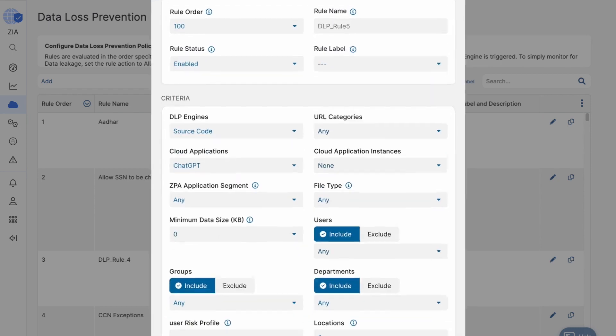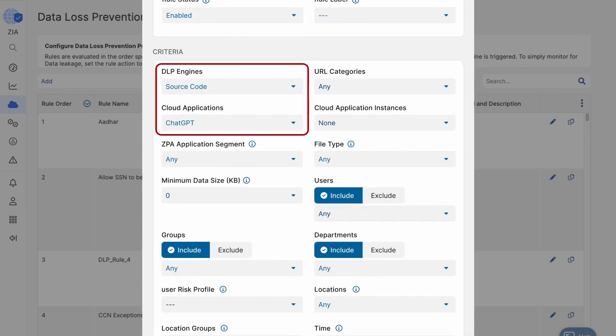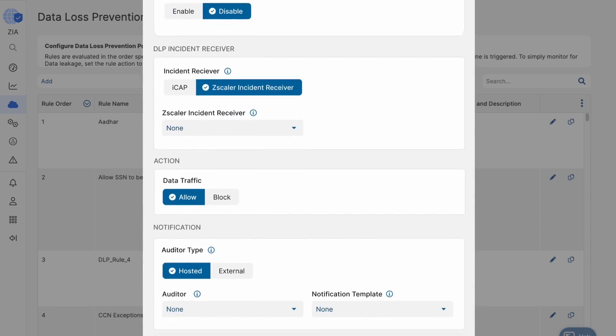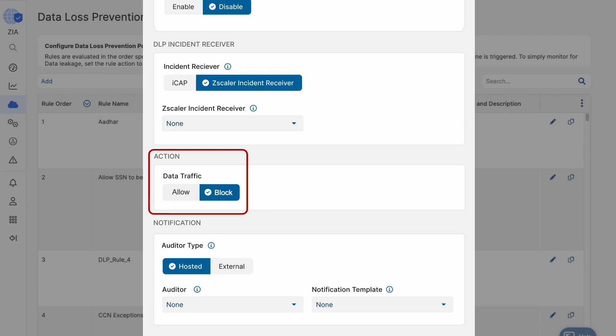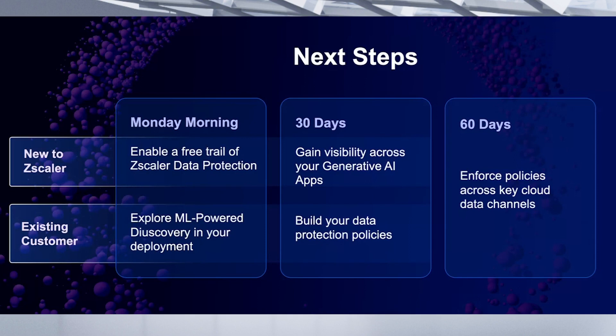We also provide context — for example, if I determine source code is being uploaded to ChatGPT, I can take an action to block the source code from being uploaded, notify the end user, and also notify an auditor. This provides visibility across all the Gen AI applications being used, and gives you control over what data can go to Gen AI applications — from an allow, block, and coaching perspective as well as from an isolation perspective. Your next steps: get a free trial of Zscaler data protection, explore our ML-powered discovery across multiple channels, gain visibility across your generative AI applications, understand which applications are used by which departments and users, and then protect your data going to these Gen AI applications.